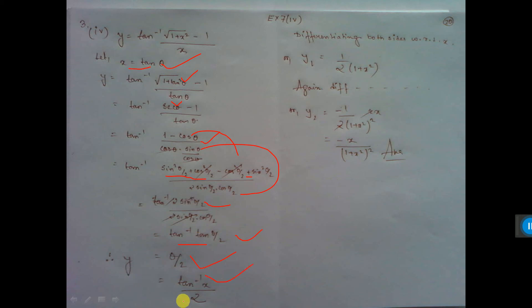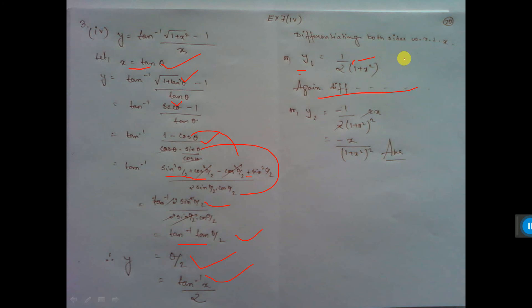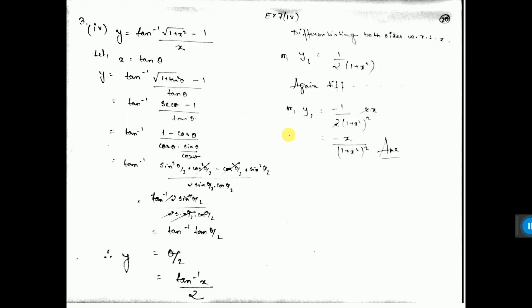Now differentiate — you will get y₁, the first differentiation: half times 1/(1+x²). Again differentiating, (1+x²) goes up to the power minus 1, giving minus 1 times (1+x²) to the power minus 2, times d/dx of x² = 2x. Minus 2 goes down and becomes plus — and that is the answer. So this is the same type of sum.